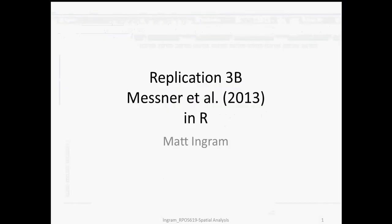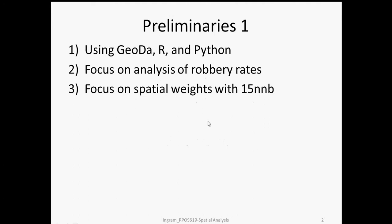Hi everybody, this is Matt Ingram again with Replication 3B. Replication 3 is a reproduction of the results reported by Steve Messner and his co-authors in 2013 in the Justice Quarterly piece we've read for class. The B portion of the replication is done in R. We are doing the replication in three different environments: Geoda, R, and Python. If you're doing these in sequence, then you've already done the replication in Geoda, and we are now doing it in R.